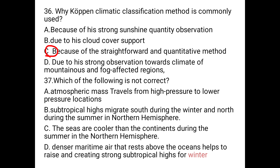Question number 37: Which of the following is not correct? A. Atmospheric mass travels from high pressure to lower pressure areas. B. Subtropical highs migrate south during winter and north during summer in the northern hemisphere. C. The seas are cooler than the continents during summer in the northern hemisphere. D. Dense maritime air that rests above the oceans helps to raise and create strong subtropical highs for winter. The answer is D — not during the winter, but during the summer.